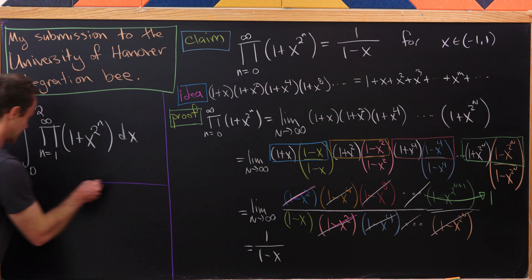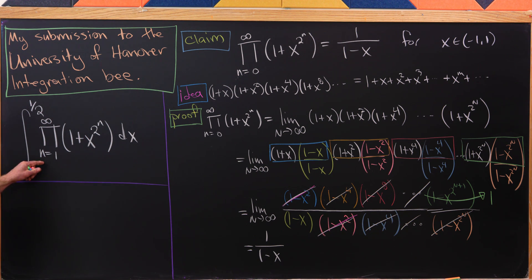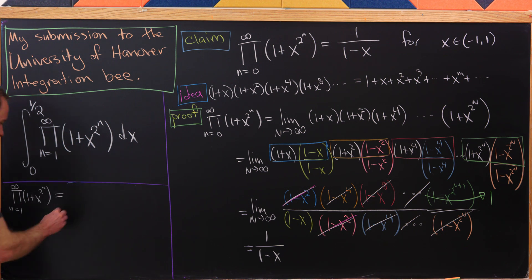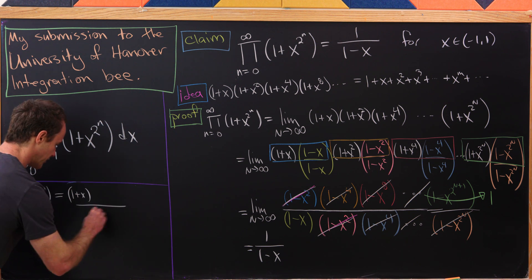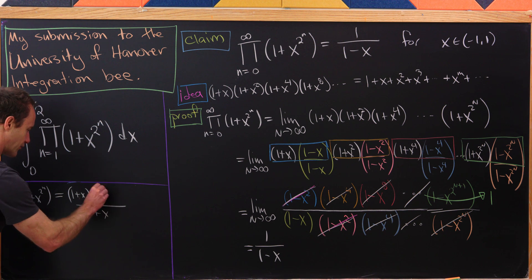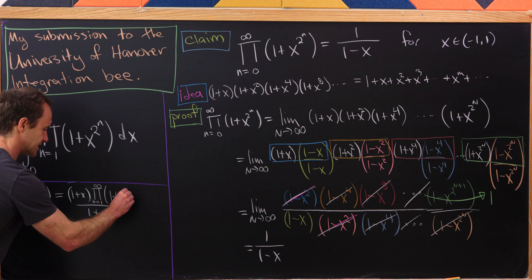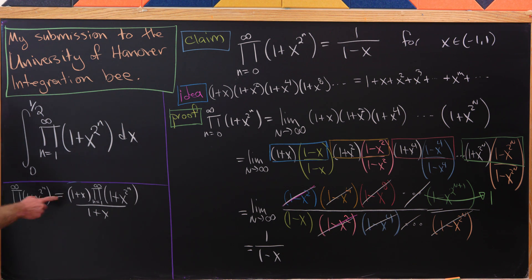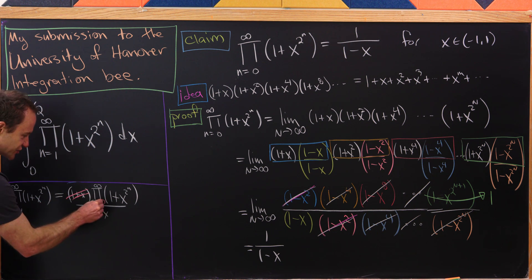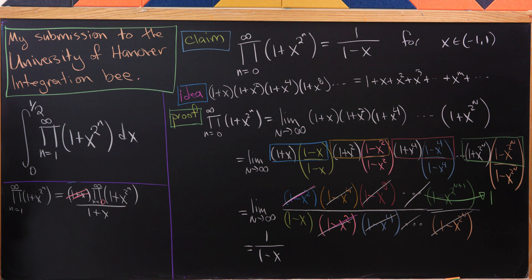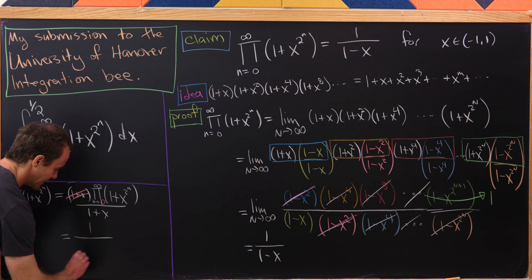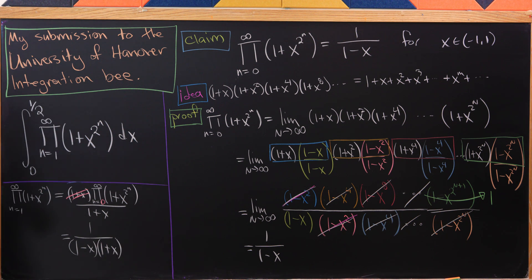Let's jump over here to our integral and notice we have a product starting at 1. This product starting at 1 to infinity of 1 plus x to the 2 to the n—I can multiply this by 1 plus x over 1 plus x. Then I'll sneak this 1 plus x into the product by changing the starting term from 1 to 0. But now applying my claim that will give me a 1 minus x in the denominator. So I have the denominators now 1 minus x times 1 plus x. And so that's the function that we wish to integrate, which is very elementary.